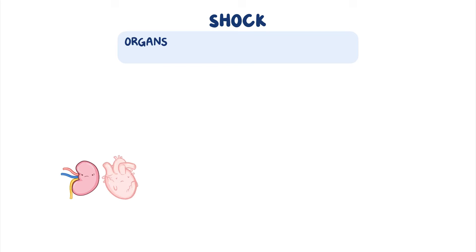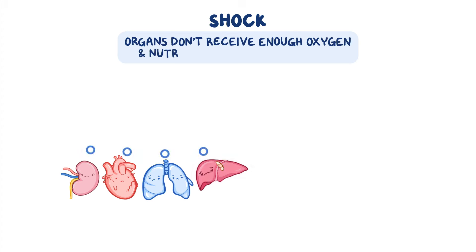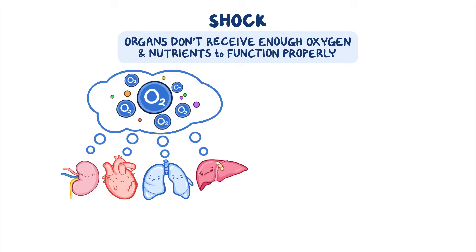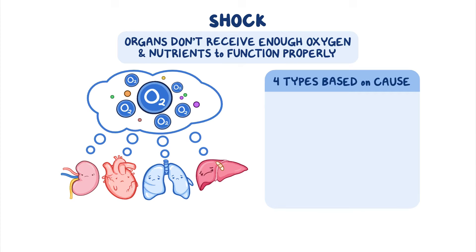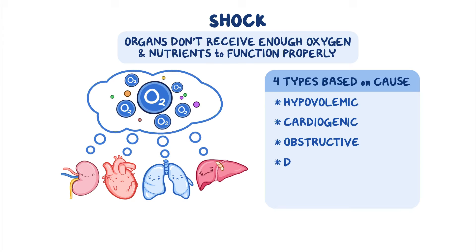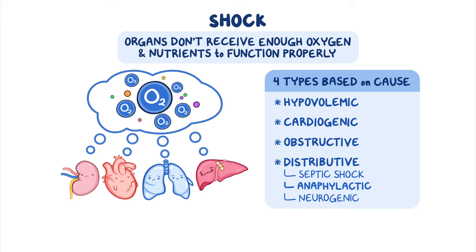Shock is a life-threatening condition that occurs when body organs don't receive enough oxygen and nutrients to function properly. Shock can be grouped into four types based on the cause: hypovolemic, cardiogenic, obstructive, and distributive shock, which can be further divided into septic, anaphylactic, and neurogenic.